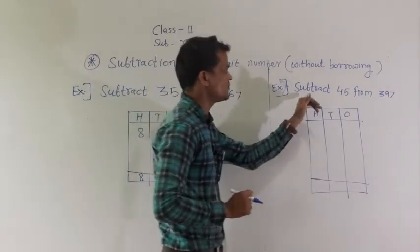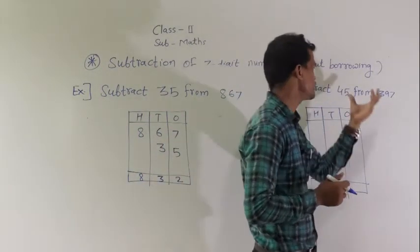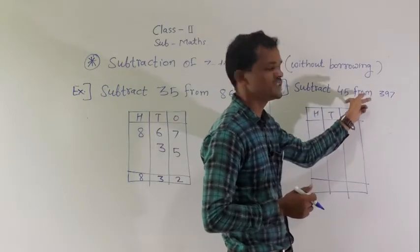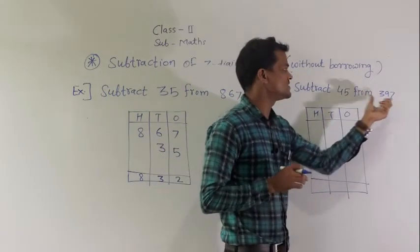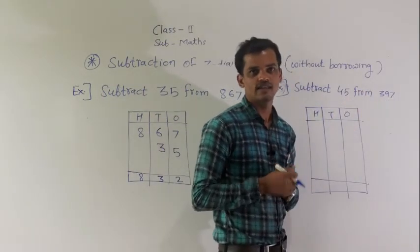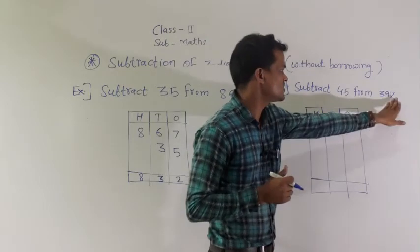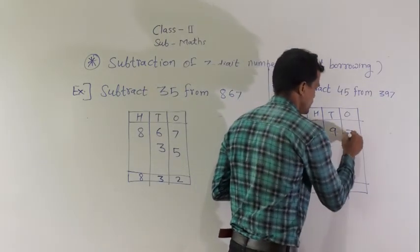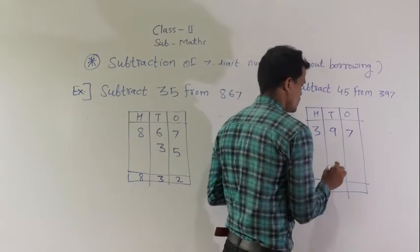Next example: subtract 45 from 397. So, between these 2 numbers, which is the greatest number, which number has more digits, that number is greater. So, this number is greater: 397 minus 45.